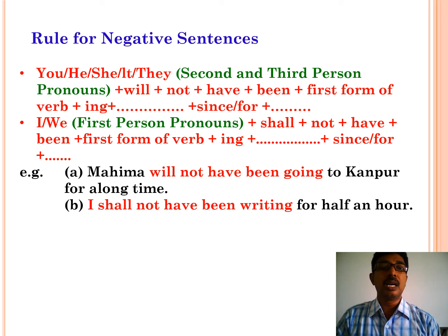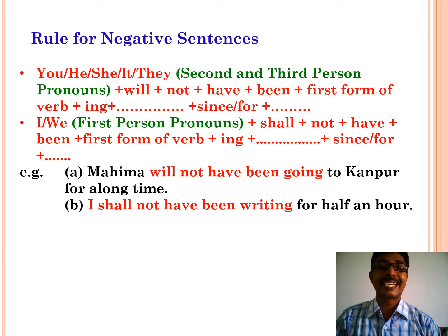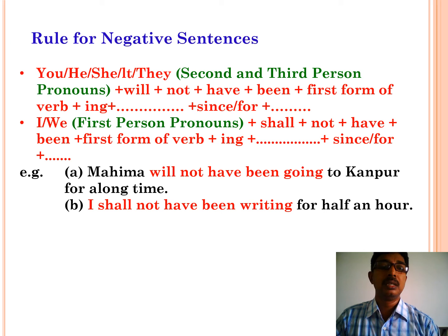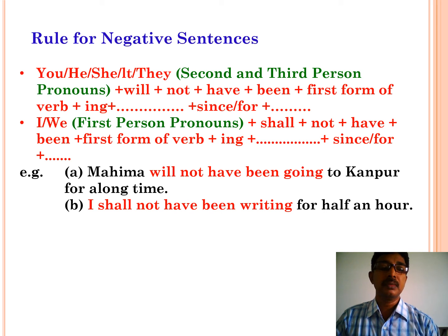Now let us see the rules for negative sentences in future perfect continuous tense. The structure is: second and third person pronouns — you, he, she, it, they — plus will — plus not — plus have — plus been — plus first form plus -ing — plus since/for — plus object. Examples: my mom will not have been going to Kanpur for a long time. I shall not have been waiting for half an hour.